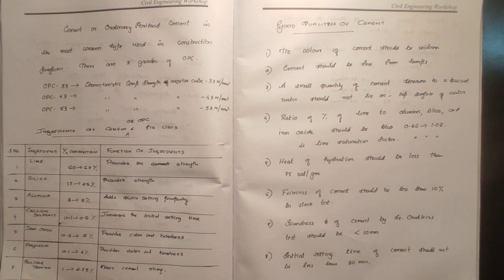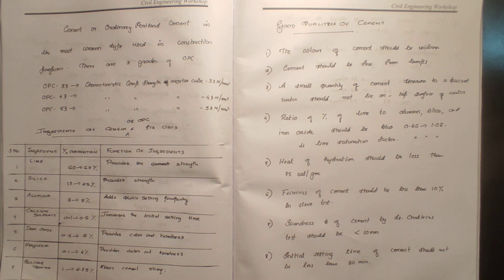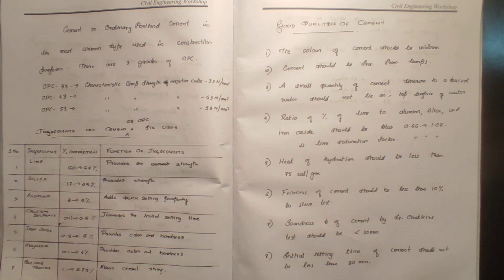In the case of OPC 53, its characteristic compressive strength must be 53 N/mm². This covers the ingredients of OPC cement and its grades.